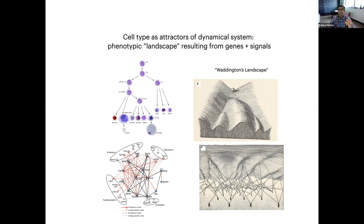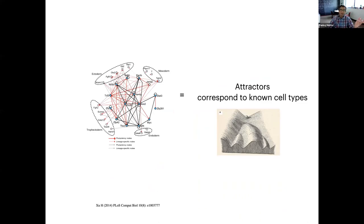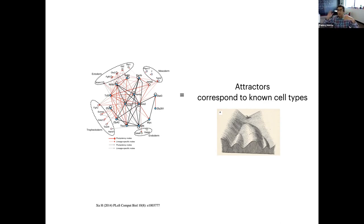Our basic idea was: let's try to use this Hopfield construction. This looks like the Hopfield model — I know the attractors I want — and I'm going to say that the developmental network can be reconstructed after the fact and treated as an inverse problem. I can calculate the energy landscape using the projection method I described.